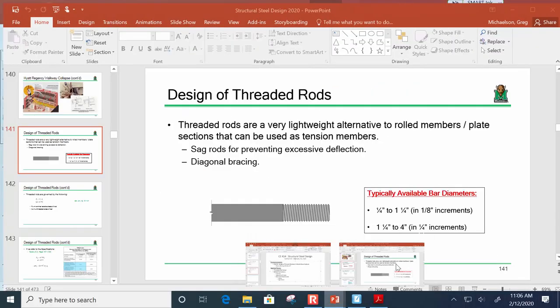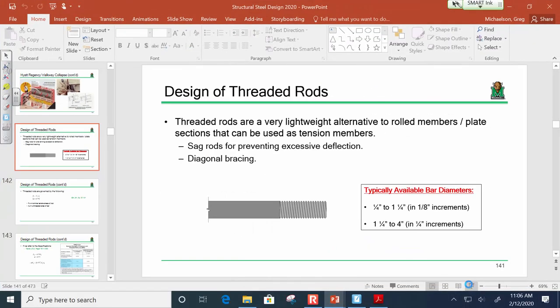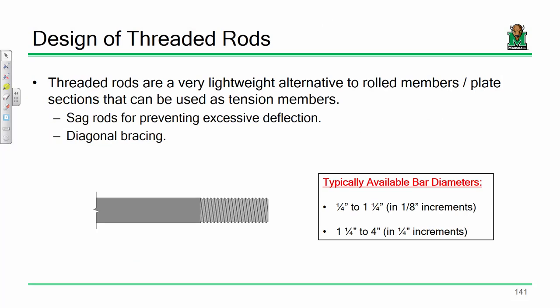Last time we ended our discussion with something probably a bit depressing — the Kansas City Hyatt collapse and the people who died that day. I want to talk today about the mechanics of that, and then we're going to do an example somewhat similar to that design.